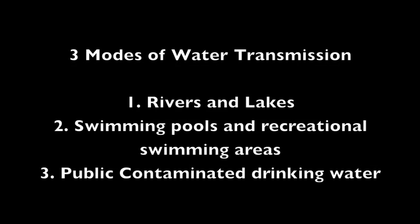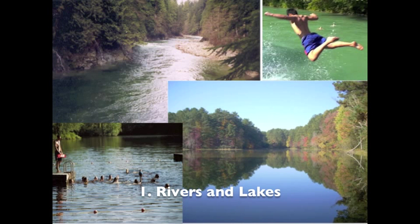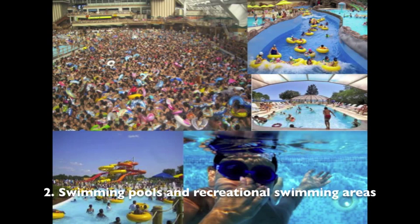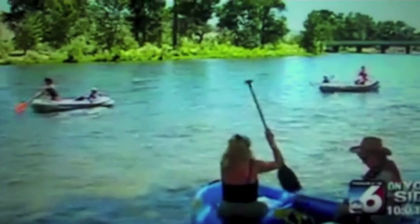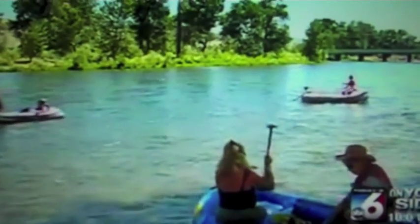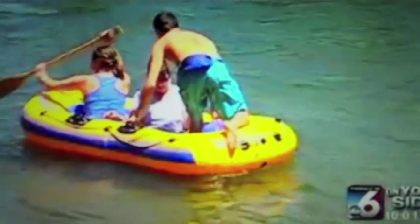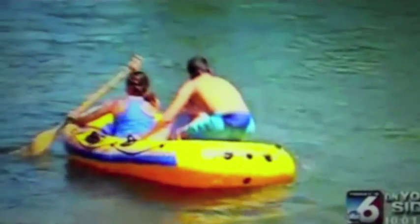The most common mode of contraction is through the ingestion of contaminated water. There are three main ways a human can come into contact with the parasite through contaminated water: one, ingestion of lake, river, or pond water; two, ingestion of water in pools, water parks, or wave pools; and three, ingestion of contaminated groundwater. River and lake water is the most common water source associated with crypto because it comes into direct contact with animal feces most often.